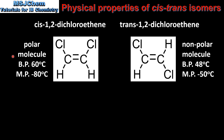As you can see, the cis isomer has a higher boiling point than the trans isomer. If we compare the melting points, the cis isomer has a lower melting point than the trans isomer.